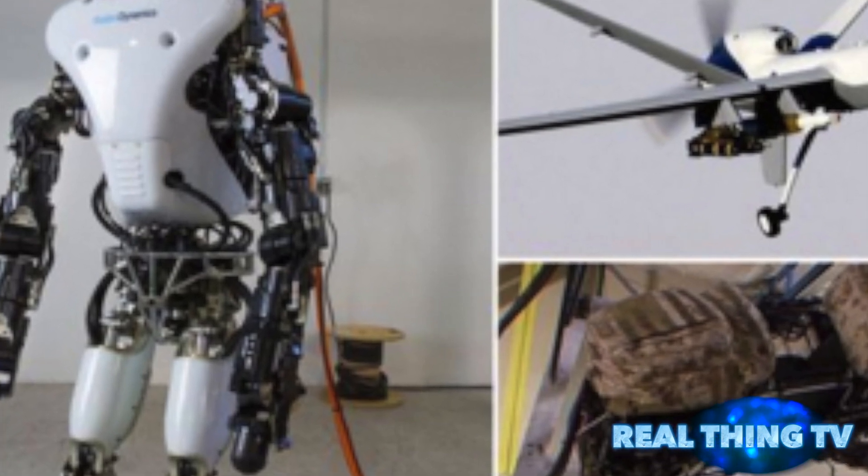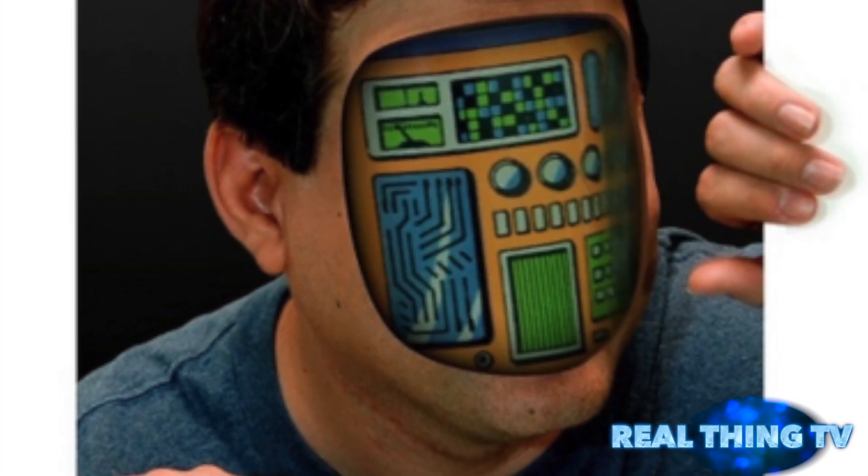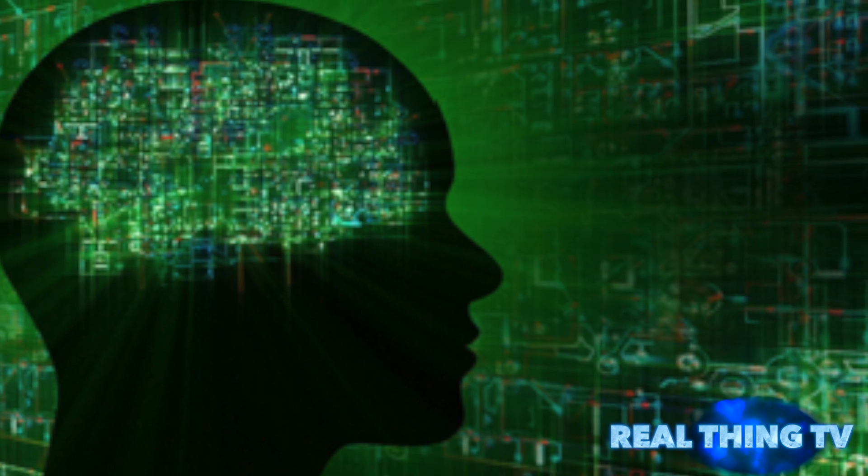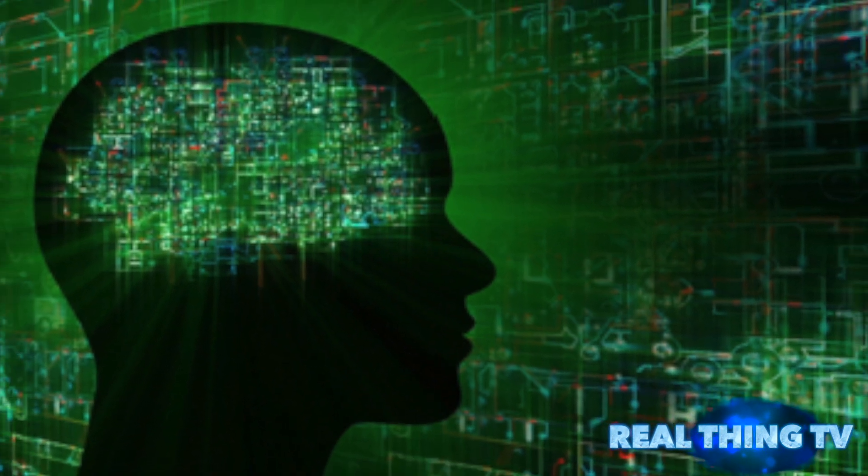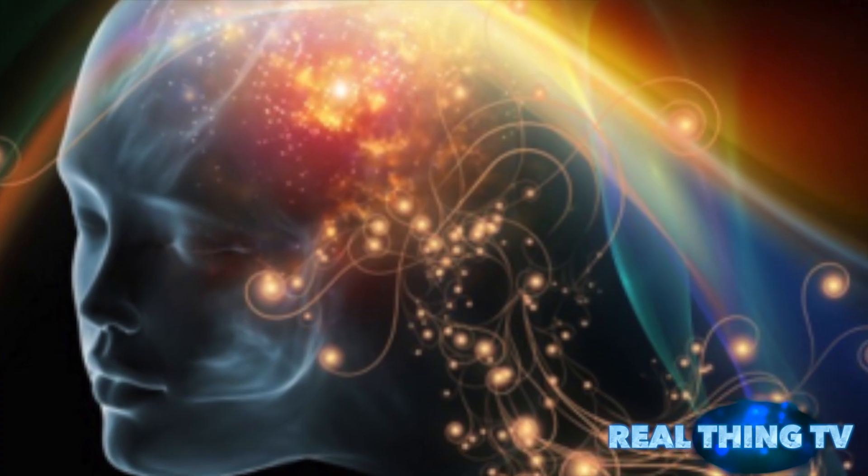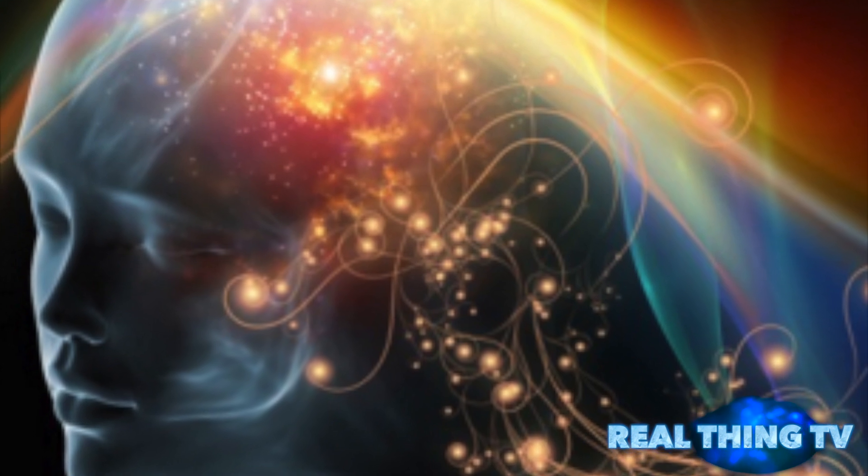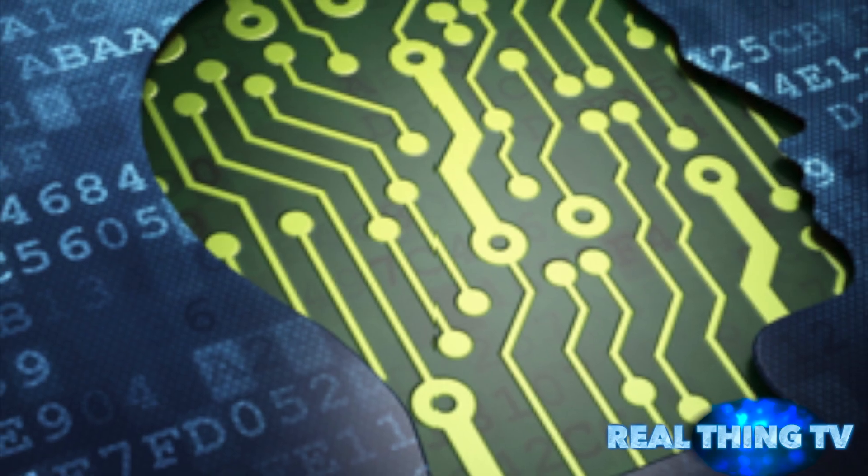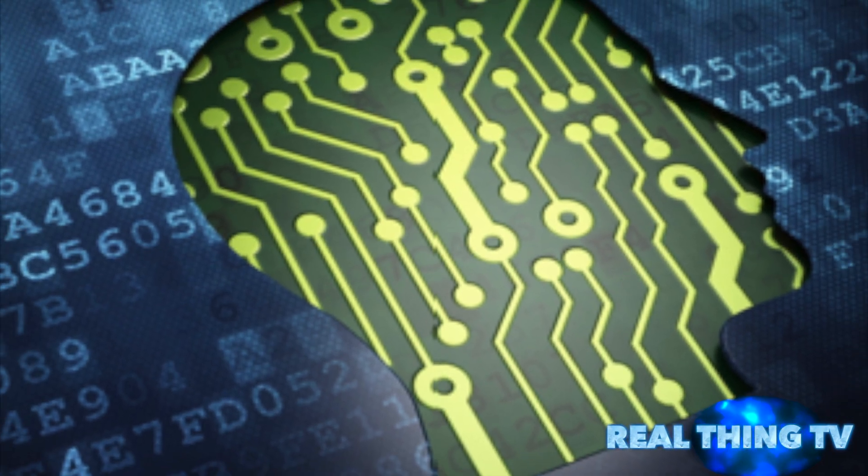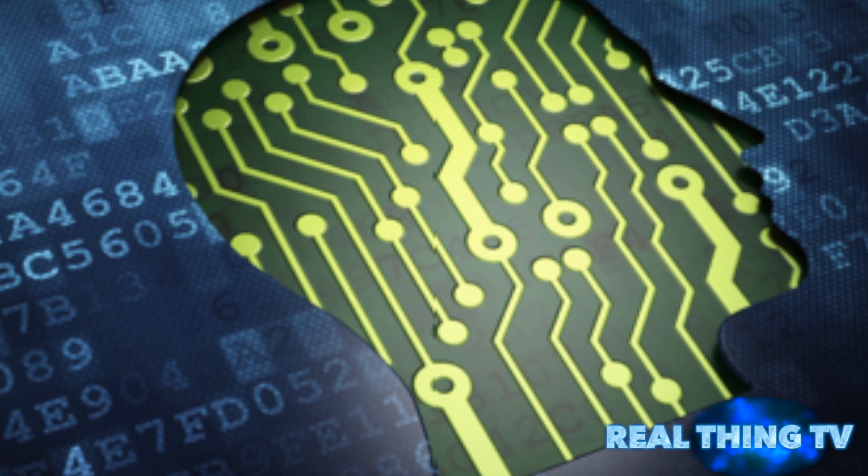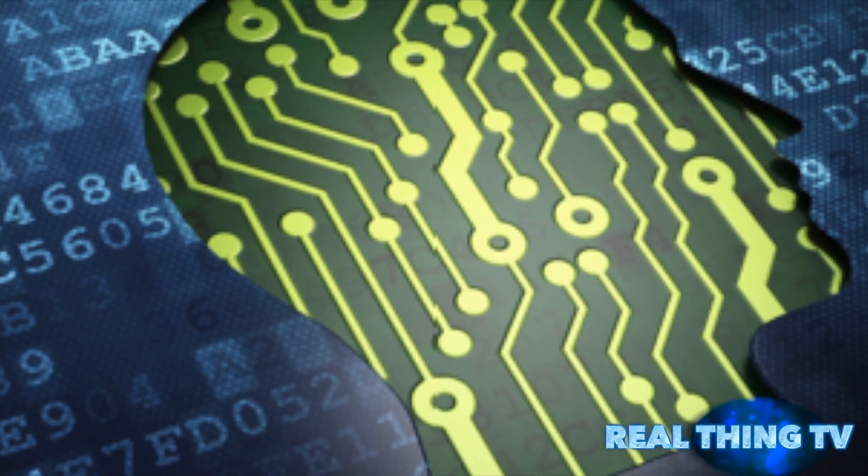DARPA said it wants to improve the technology so the system can communicate clearly and individually with any of up to one million neurons in a specific region of the brain. For years now, industry players have said that mixing biology and machines is going to create the most powerful technology in the future.